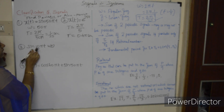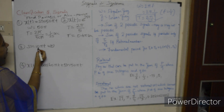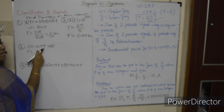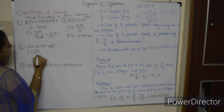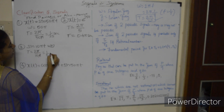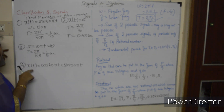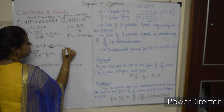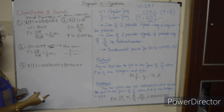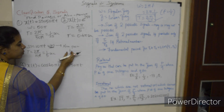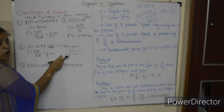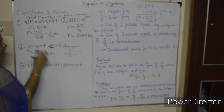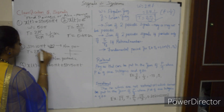Problem 3: x(t) = sin(10πt)·u(t). This is a product of two signals. sin(10πt) is periodic with T = 2π/(10π) = 1/5 second. However, u(t) (unit step) is non-periodic. When a periodic signal is multiplied by a non-periodic signal, the result is non-periodic. So the answer is non-periodic — no fundamental time period.